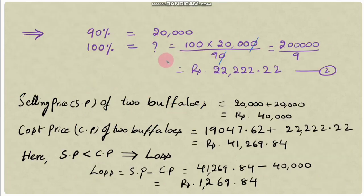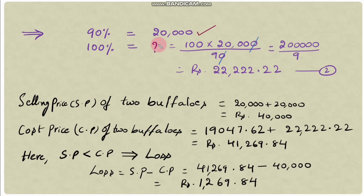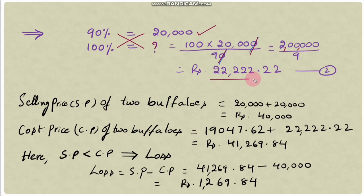Selling price of second buffalo = 20,000 rupees = 90%. So 100% = 100 × 20,000 ÷ 90 = 2,000,000 ÷ 9 = approximately 22,222.22 rupees. Cost price of second buffalo = rupees 22,222.22.